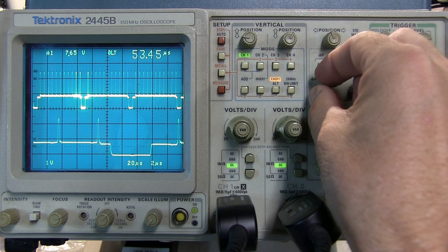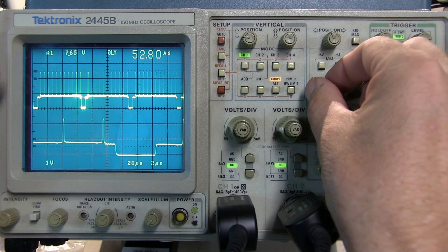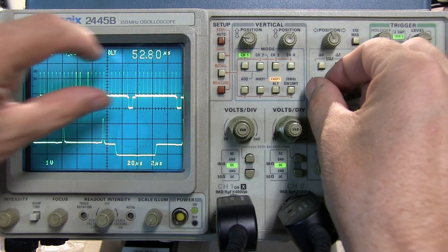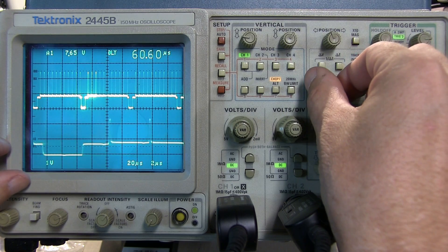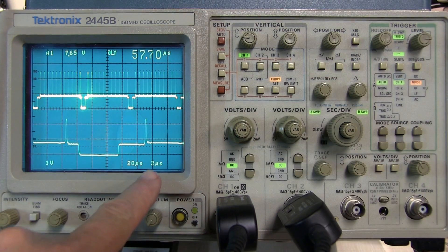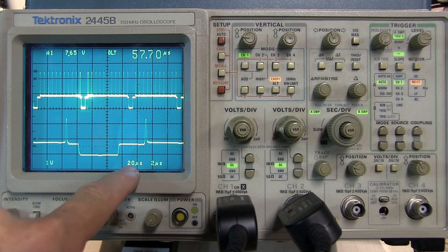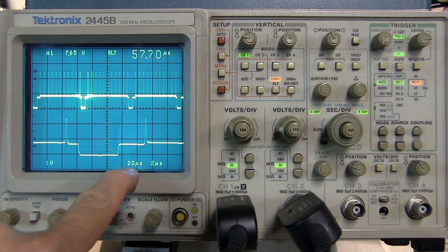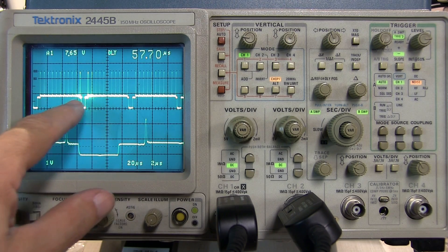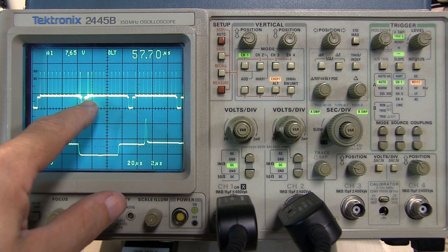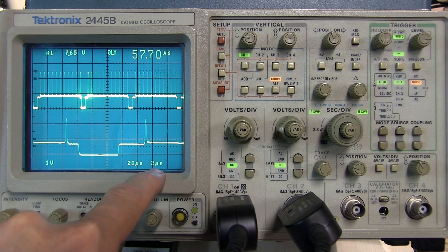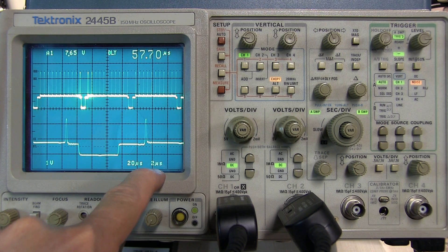This now allows me to trigger on and capture a slow time base setting of a waveform and zoom in on a particular area. You can see from the display down here that the main time base is running at 20 microseconds per division and the intensified portion here which is the B time base is running at 2 microseconds per division or 10 times faster.